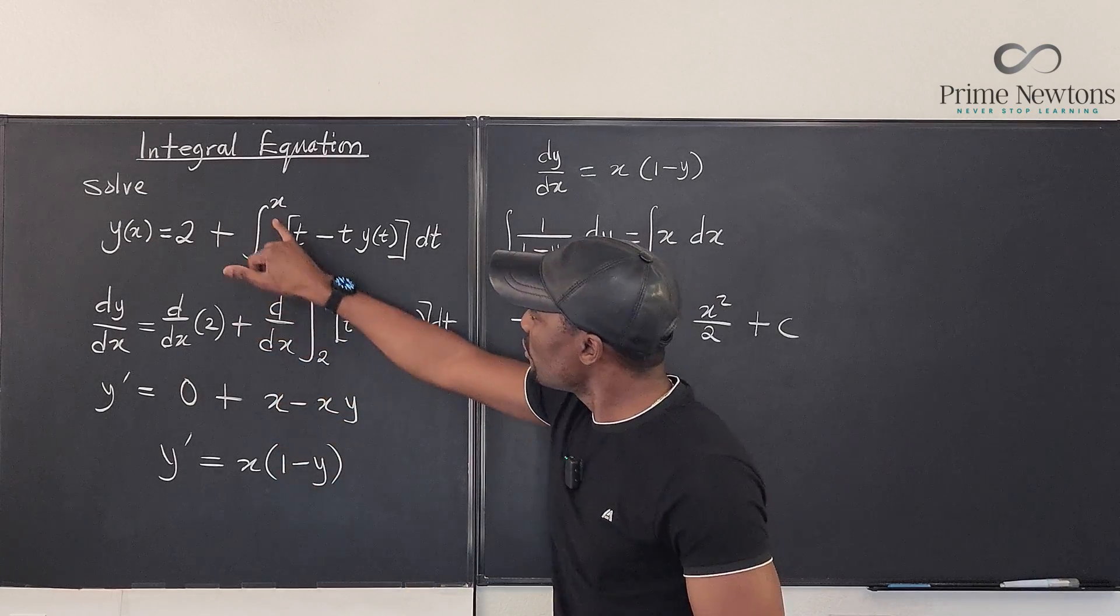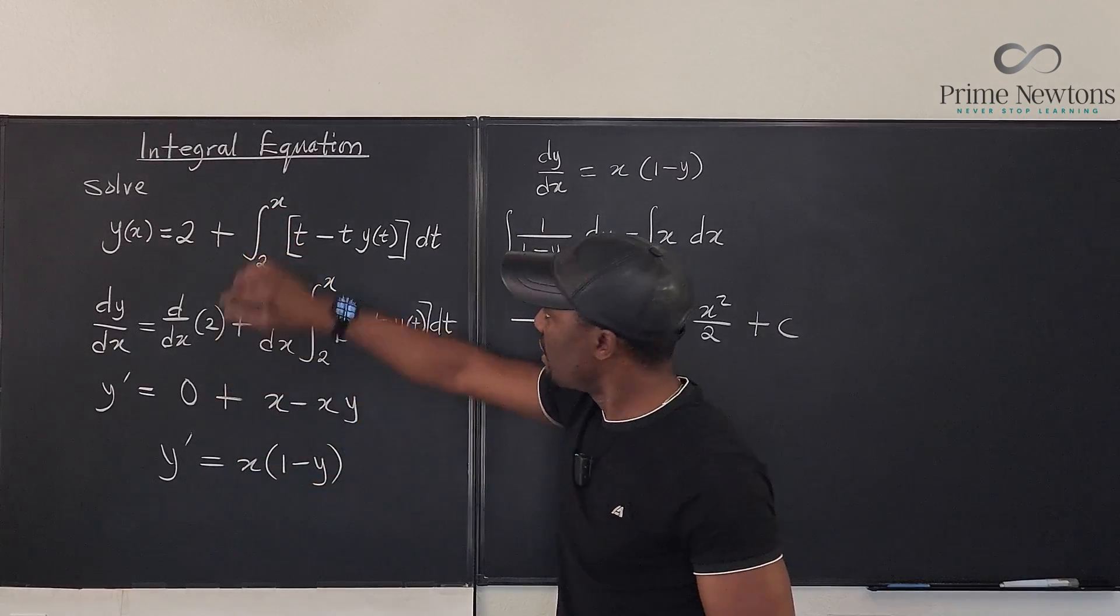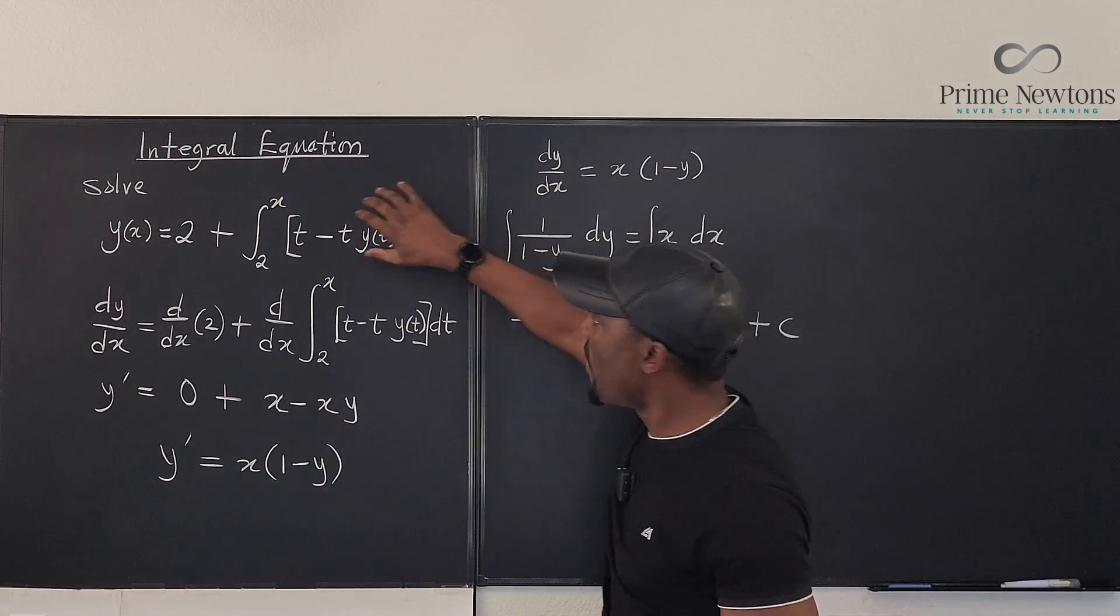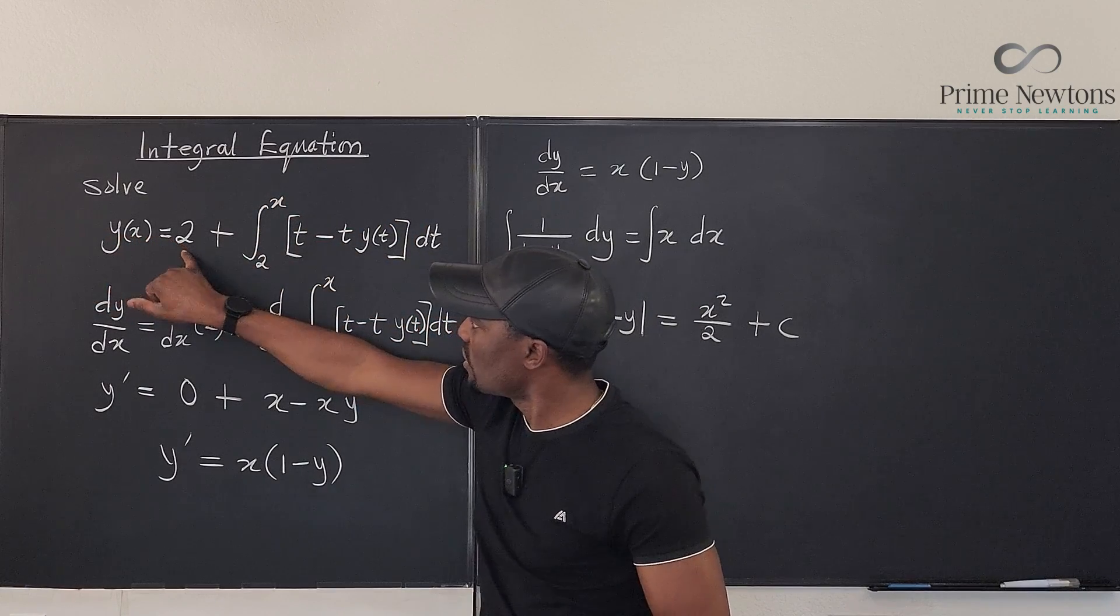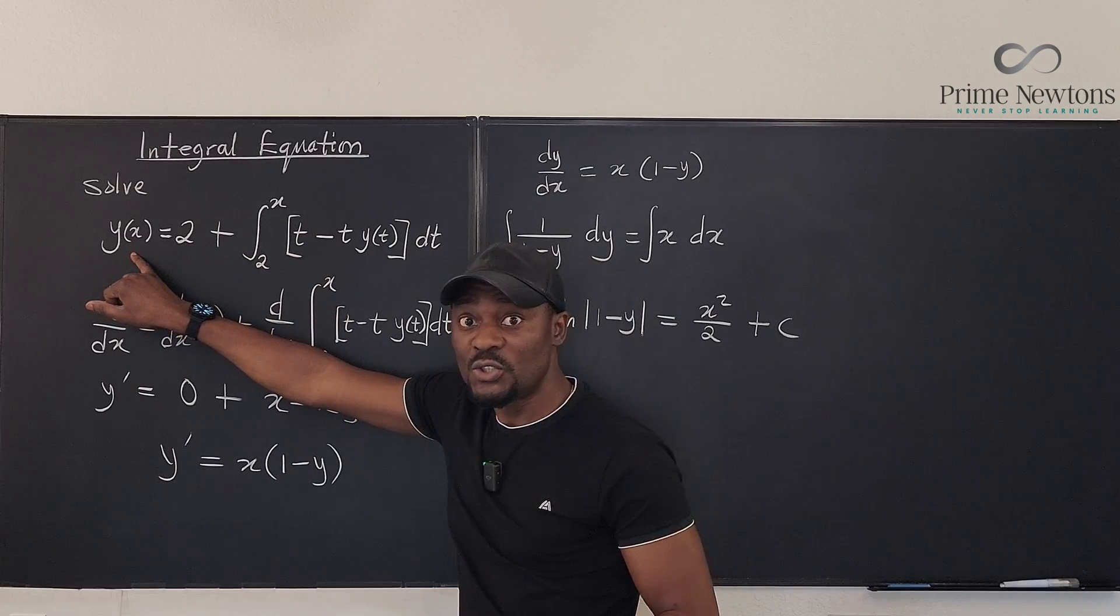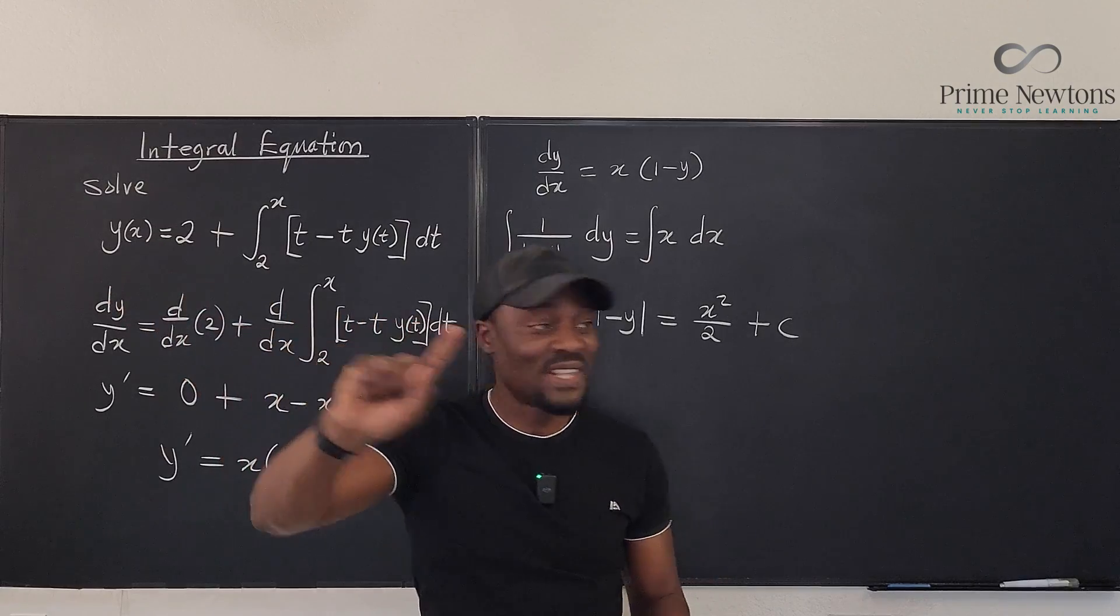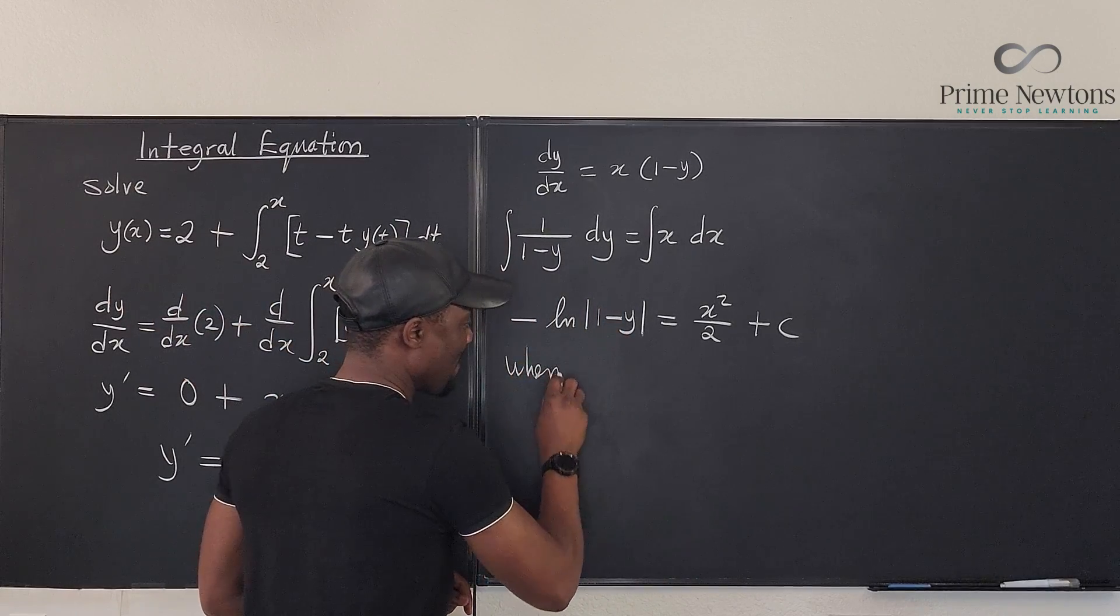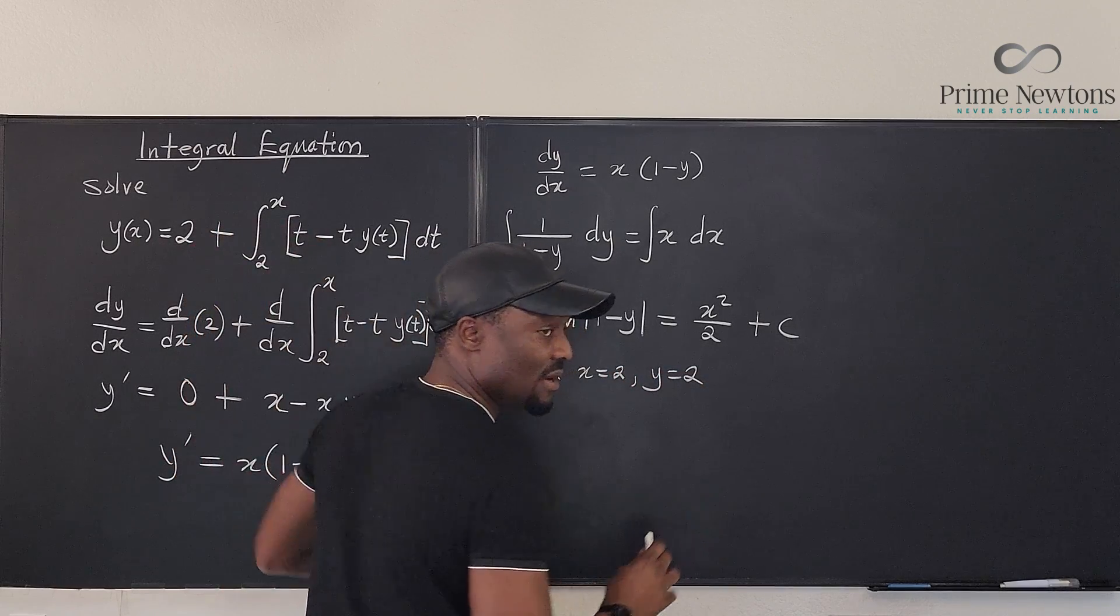So why don't you make this the same as this? Let x be equal to 2. Because when x equals 2, everything here becomes 0. So when x equals 2, you're going to have y as a function of x is going to be just 2 because it will be 2 plus 0. And when x is 2, y is also 2. Come use that here. So just say, when x equals 2, y equals 2.